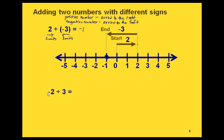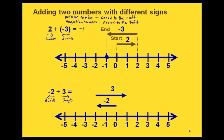Now let's look at a slightly different example. In this one we have negative 2 and positive 3. Since this is negative, it's going to be an arrow to the left two units. Since this is positive, it will be an arrow going to the right three units. So here's our number line. We're going to start at zero, go two units to the left, and then from there go three units to the right. And that gives us positive 1.